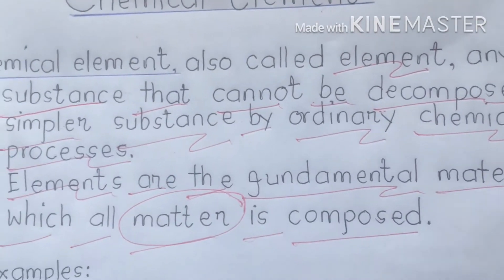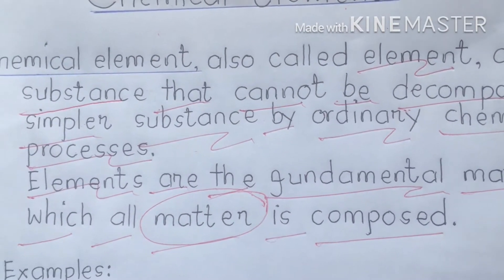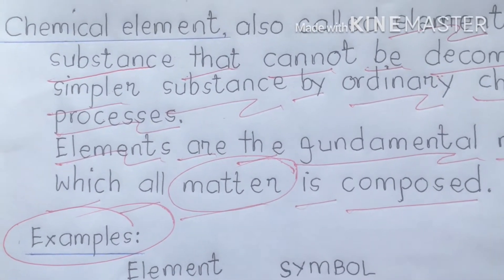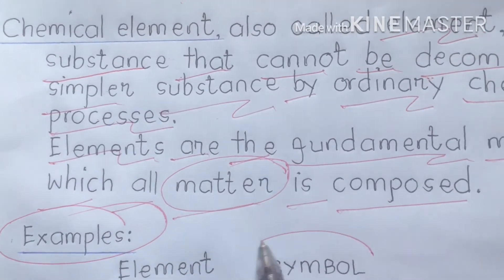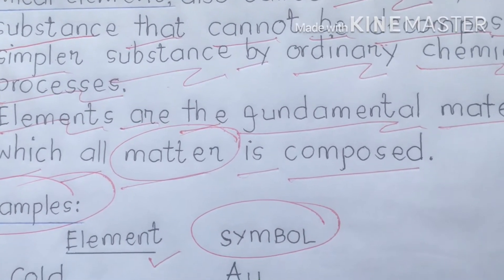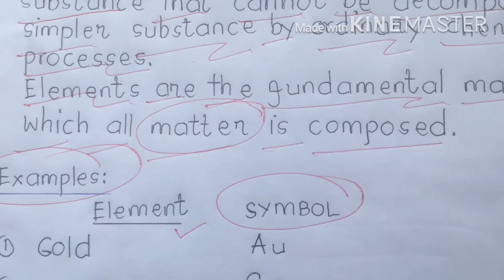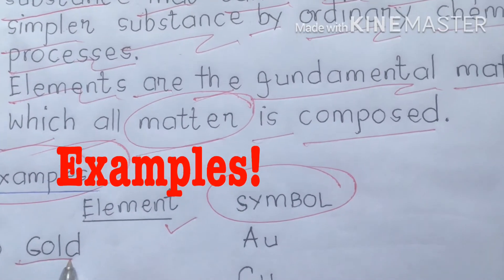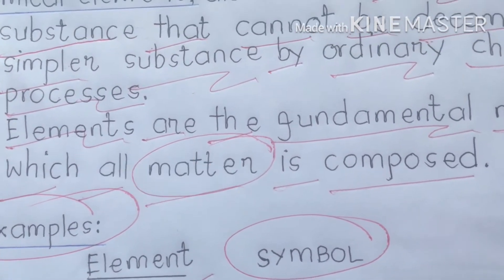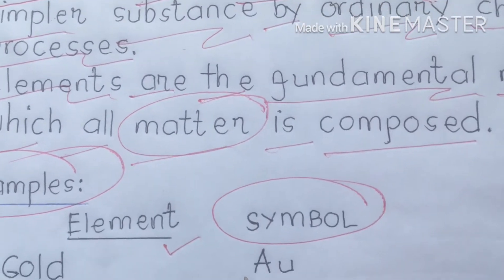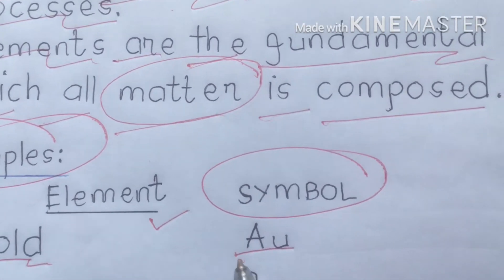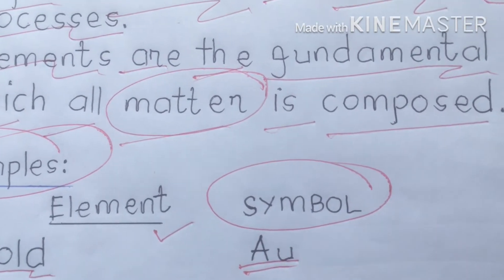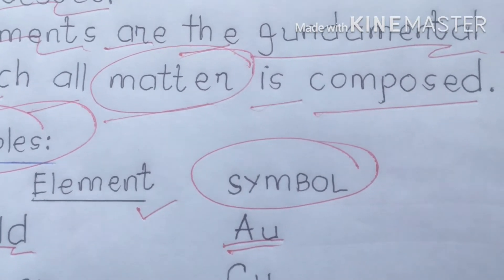Today class, I am going to show you different examples of elements with their symbols. First is gold. What is the symbol of gold? It is Au — uppercase A, lowercase u. This is the symbol of gold, students. Take note of that.